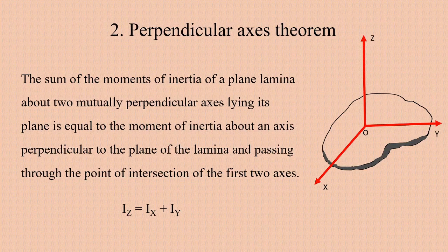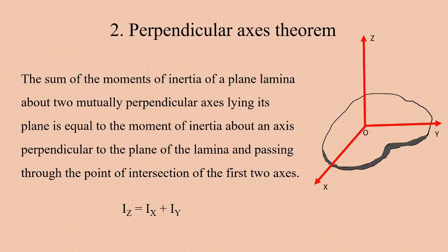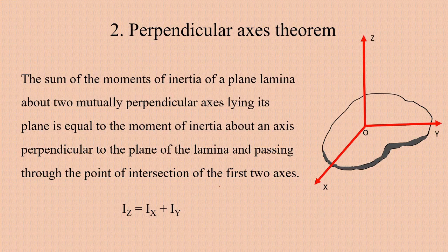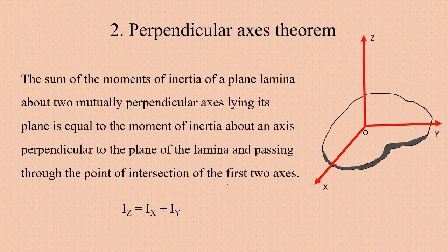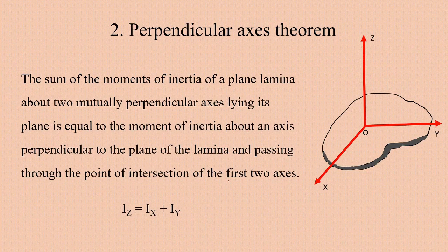What does the perpendicular axis theorem say? Statement: The sum of the moments of inertia of a plane lamina about two mutually perpendicular axes lying in its plane is equal to the moment of inertia about an axis perpendicular to the plane of the lamina and passing through the point of intersection of the first two axes.